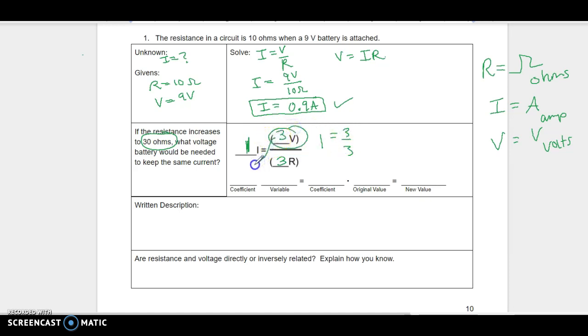So I'm looking for the voltage. So that's going to be 3V. 3 times the original voltage was 9, so the new voltage would be 27. All right, so my sentence would be to keep the same current. Oh, man, this is hard to write. If the resistance triples, the voltage must triple.